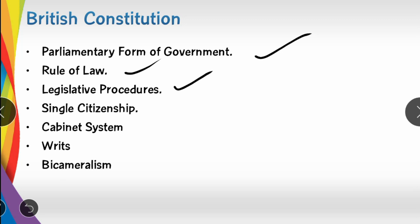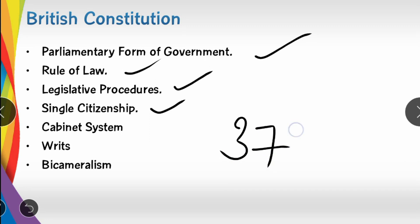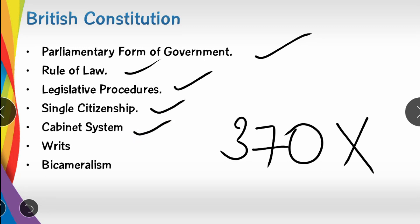From the Government of India Act 1935 and the British Constitution, we also take the concept of single citizenship. Some countries have dual citizenship, but in India there is one citizenship. Article 370 provided a separate citizenship for the state of Jammu and Kashmir. We also adopted the cabinet system from the British Constitution.